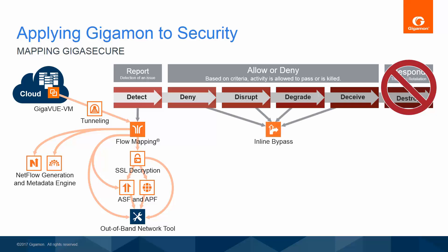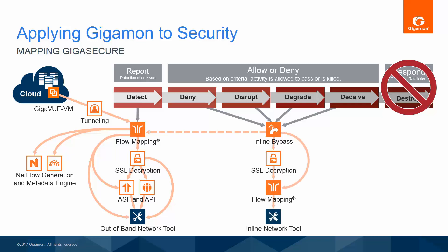For the categories of deny, disrupt, degrade, and deceive, security tools need to intercept packets before delivery, so they go through inline bypass. Any packet passing through inline bypass can also be copied and sent to out-of-band reporting and detection tools. As with out-of-band, some traffic is encrypted and can first be decrypted. Decrypted packets can be filtered for delivery to the right security tools. The raw traffic can also be directed to the right security tools. Any traffic permitted through the various security tools can also be directed to out-of-band tools for further detection and reporting by a broader suite of security tools, instead of depending exclusively on the inline tools that must make nearly instant forwarding decisions. After inline tools have approved packets, those packets are allowed to continue to the original destination.